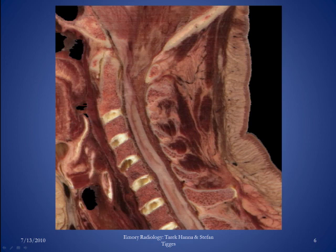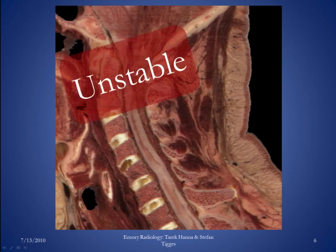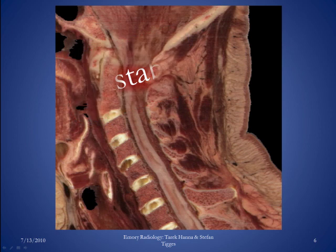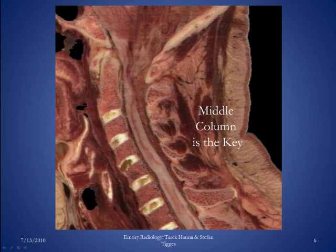We're going to introduce the concept of stability in the cervical spine. For the purposes of this lecture, although this is an oversimplification, we're going to assume that anything in the high cervical spine involving the occipital condyles, C1, or C2 is an unstable fracture. In the lower cervical spine, we use the three-column method, where you divide the cervical spine into three separate columns. If only a single column is affected, you have a stable fracture. If two columns are affected, you have an unstable fracture. Since it's extremely unusual to have a fracture involving the anterior column while skipping the middle column, a fracture that involves the middle column is effectively an unstable fracture.